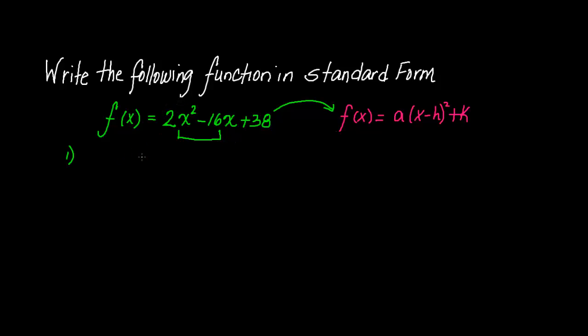This is what that's going to look like. You take the two outside of the parentheses. Plus 38 is also outside the parentheses because we're only working with these two terms. Now if I factor out a two from that first term, what's left? X squared minus. And if I factor out a two from 16, what's left? 8X. And there you have it. That's the first step, we factored out a two.